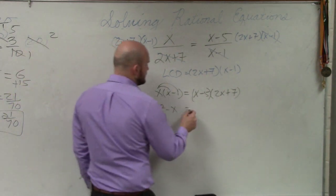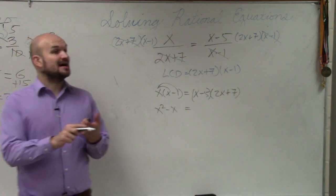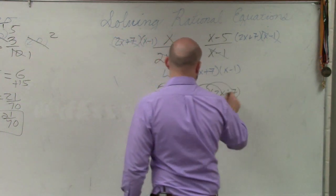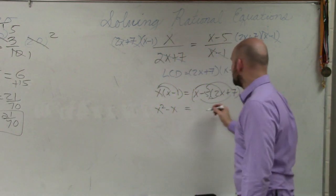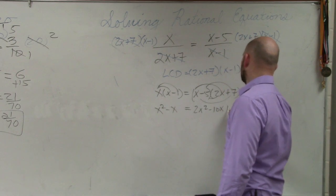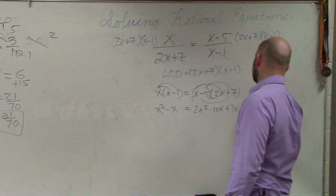On the right-hand side, well, we can apply distributive property, but we could also use the box method or we could also use FOIL. So by using FOIL, I get x times 2x, which is 2x squared minus 10x plus 7x minus 35.